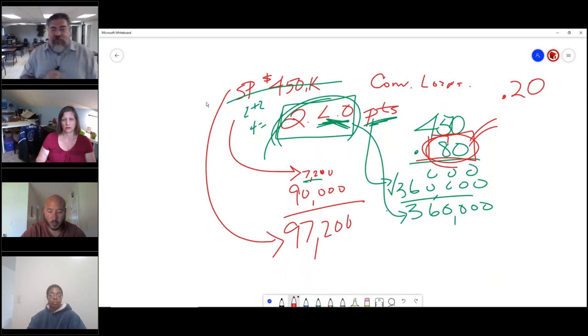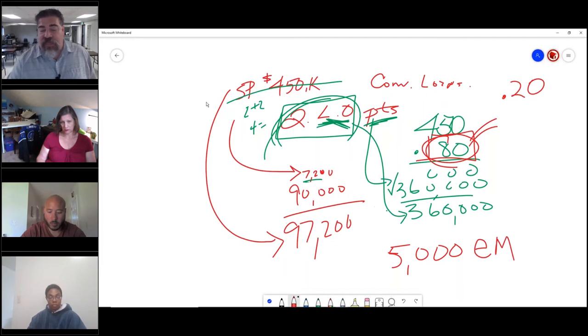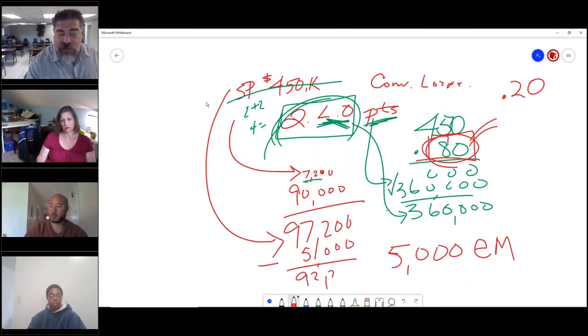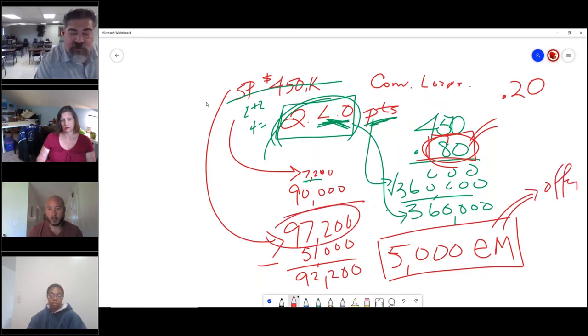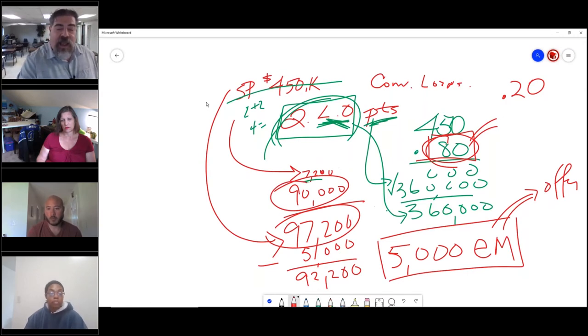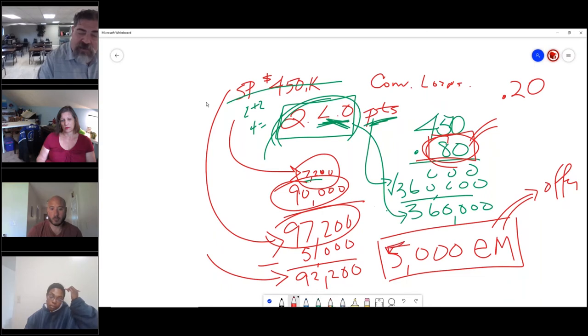If he has submitted earnest money to me, that would not be calculated in this money. So let's change this story even further. If he put $5,000 down as earnest money when they wrote the offer, you would subtract that and he would need to bring $92,200, because he gets credit for the day he wrote the offer. Here's the 20% down and here's the $7,200 for the loan, so this would be what he needs to bring now because we have to credit him the earnest money.